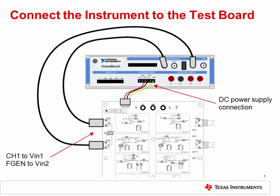Let's now make some connections between the Virtual Bench and the test board. Use the included cable to connect to the DC power supply. Use a BNC cable to connect channel 1 of the Virtual Bench oscilloscope to VN1 on the test board. Use another BNC cable to connect the Virtual Bench function generator labeled FGEN to VN2 on the test board.